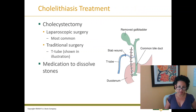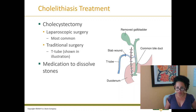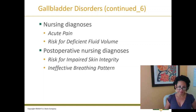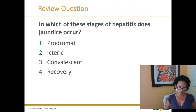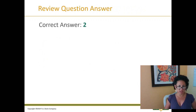Therapeutic interventions include cholecystectomy — surgical removal of the gallbladder. Medications can also be used to dissolve stones. Nursing diagnoses include acute pain, impaired skin integrity, and ineffective breathing patterns. Then we get to review questions — make sure you quiz yourself on those.